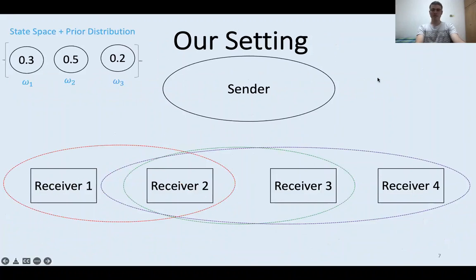Let's illustrate our setting through an example. We have three states with probabilities 0.3, 0.5, and 0.2. We have a sender and four receivers, and three communication channels. The red channel is observed by the first two receivers, the purple channel by the last three receivers, and the green channel by receivers two and three.